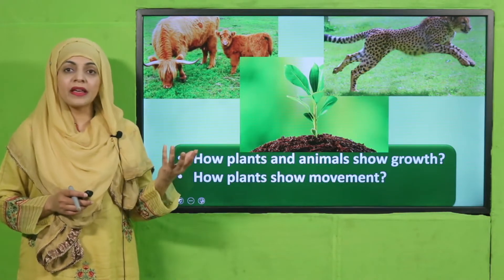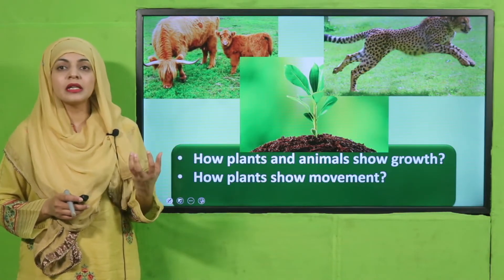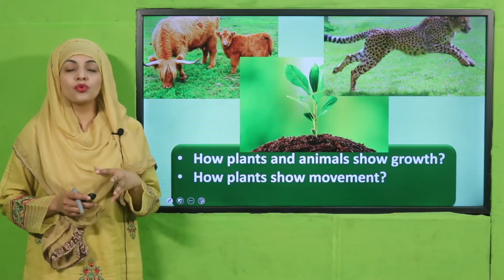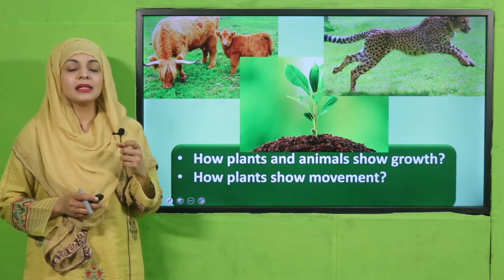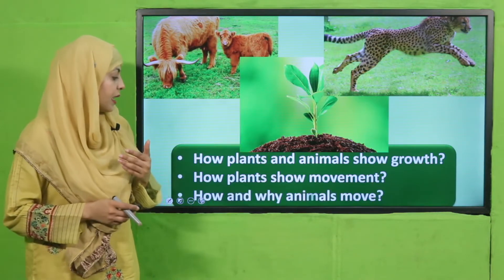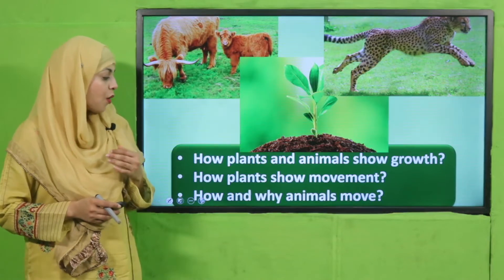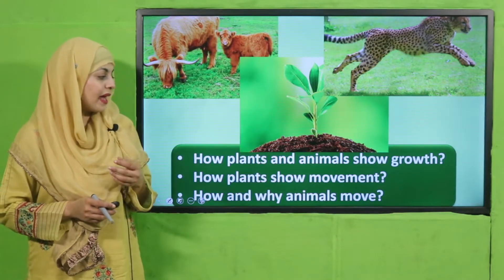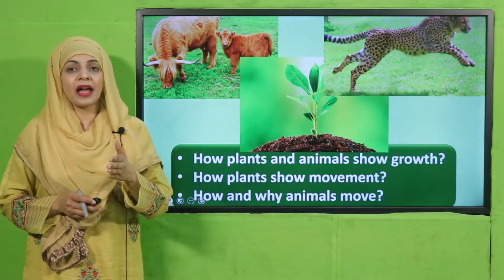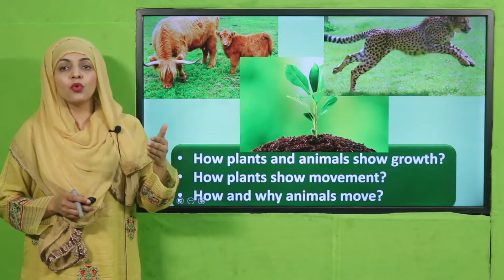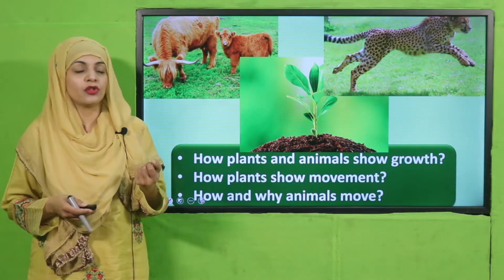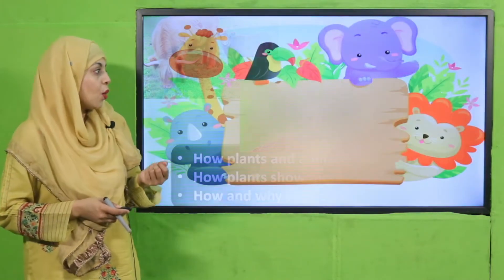Plants show movement by moving their different body organs like stems, roots, and leaves. That is how they show movement. Animals move to find food, water, and shelter, and to stay away from danger.